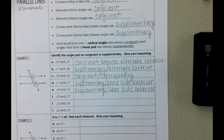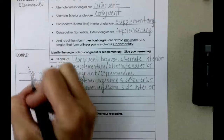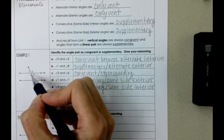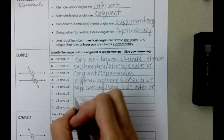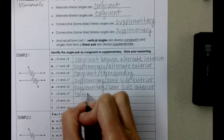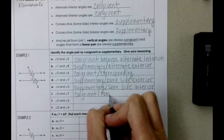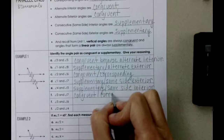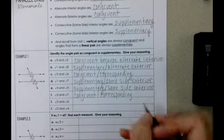Angle 3 and angle 7. Angle 3 is underneath the parallel line and to the right. Angle 7 is also underneath the parallel line and to the right. So those are going to be congruent because they are corresponding — they lie in the same place with respect to the parallel line and the transversal.